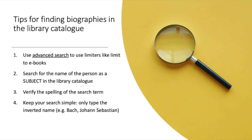Just to review, here are some tips for searching for books in the library catalogue. Make sure to use the advanced search option so that you can add limiters like limiting to ebooks. When searching for books on a topic, use a subject search. If you're not finding much on your topic or you've gotten no results, go back and verify the spelling of your search terms. Keep your search really simple — only type one or two terms — and if you're using a name, make sure to invert it with the last name, then a comma, then the first name.